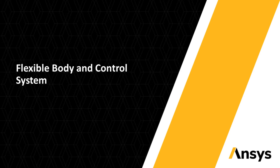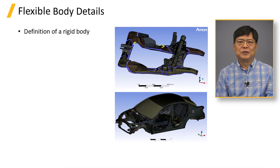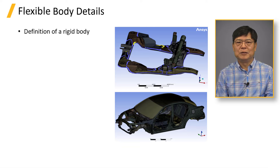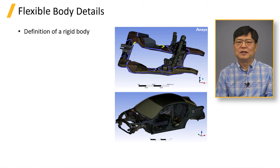Hello everyone. The rigid body has no distance change between any two points in the body under any circumstances. We do not have such a body in this world. Rigid bodies are used in vehicle dynamic simulation when stiffness is relatively higher than the other bodies or when the part is not subjected to high force.